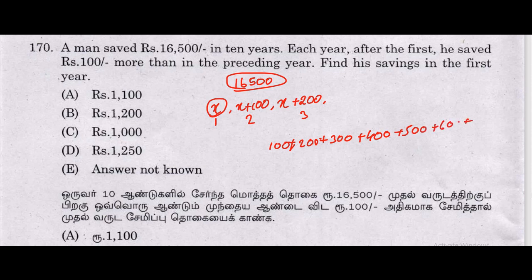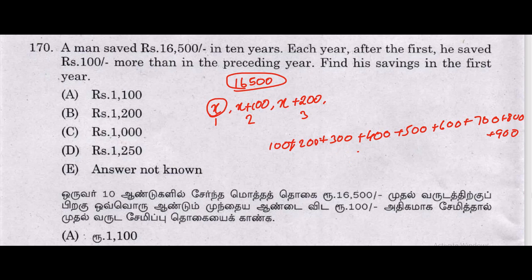Continuing the extra amounts: 600, 700, 800, 900. Adding all the extra amounts — 100 through 900 — gives 4,500. So the equation becomes 10x plus 4,500 equals 16,500.